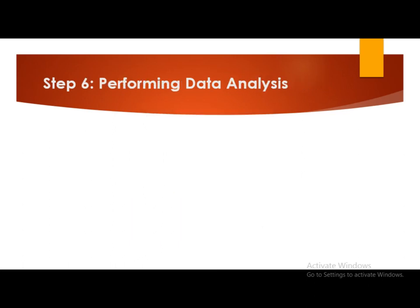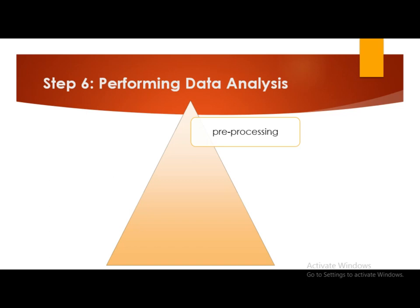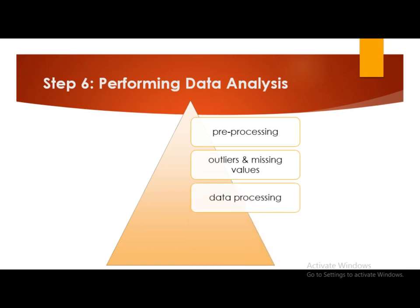Step number six is performing data analysis. Collected data is pre-processed before analyzing. Primary data collected may contain outliers and missing values. Data processing and pre-processing includes data cleaning, integration, transformation, reduction, and codification of data. The data is then analyzed through sophisticated software tools using methods like percentage methods, averages, standard deviation, univariate statistical analysis, and multivariate statistical analysis.